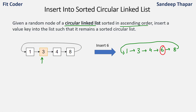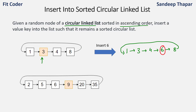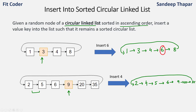Let's take one more example. In this linked list we are given a pointer to node 9 and we have to insert value 4. The location for 4 will come between 2 and 5, so 2 will point to 4 and 4 will point to 5, then 6, 9, 20, and 35. It is not necessary that we are given the first node; we will be given a pointer to any node of the linked list. Because this is a circular linked list, we can reach any node from that pointer. We need to find the appropriate location to insert the new node so the linked list remains sorted.